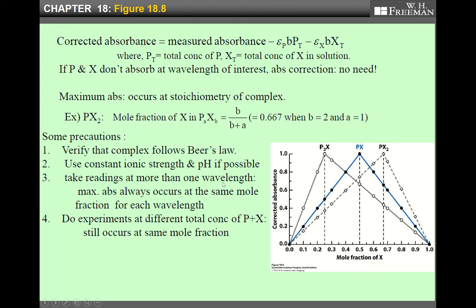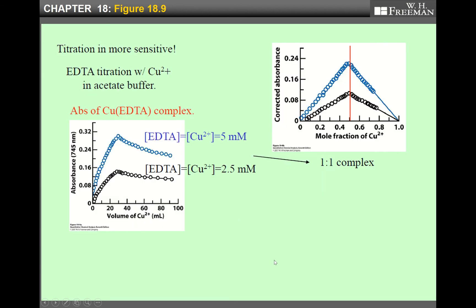And third, take readings at more than one wavelength. In principle, only one wavelength measurement is OK, but for the sake of security, you do the same measurement at different wavelengths. And final precaution is do two experiments at different total concentration of P plus X, still of course at the same mole fraction, which means that total concentration of P plus X is different, but result must be the same.